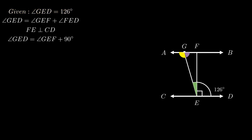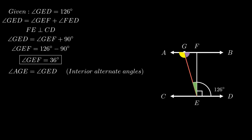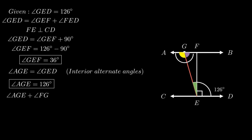Therefore, angle GEF equals 126 minus 90 = 36 degrees. For angle AGE: line GE acts as a transversal for lines AB and CD, so angle AGE equals angle GED as interior alternate angles, giving angle AGE equals 126 degrees. Since AB is a line, angle AGE plus angle FGE equals 180 degrees as a linear pair. Substituting, angle FGE equals 180 minus 126 = 54 degrees.